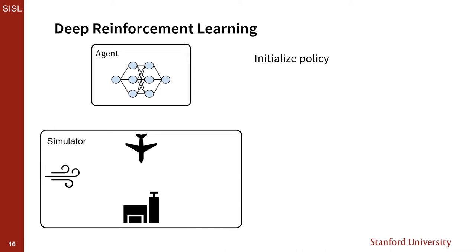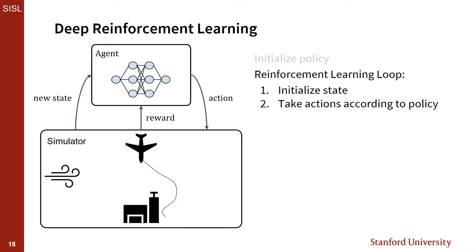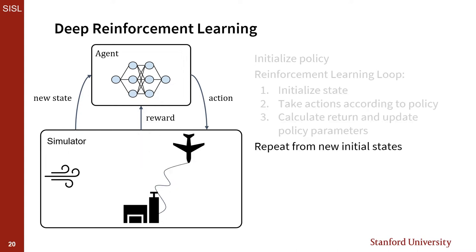Deep reinforcement learning works similarly to Monte Carlo planning. We start by initializing all policy parameters to random values, then use a simulator to generate experience. We initialize a state by picking a random starting point from all possible positions in the world. We execute a full trajectory by taking actions that our policy recommends from the given states encountered. At the end of the trajectory, we calculate a return—the total sum of discounted rewards experienced along the way—and use it to update our neural network policy to hopefully perform better on the next trial. We repeat this loop from different initial states until we converge on a policy that performs well everywhere.